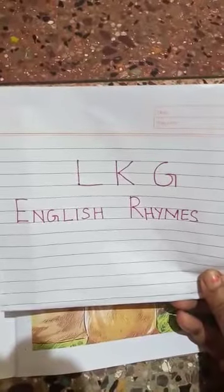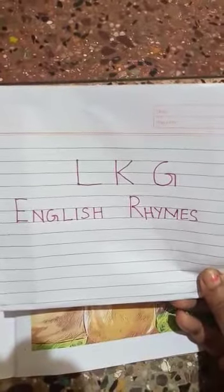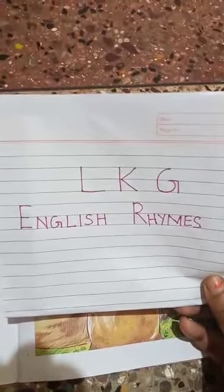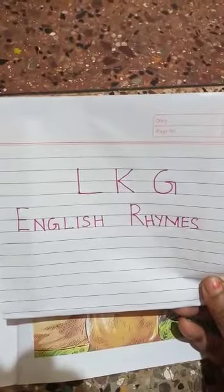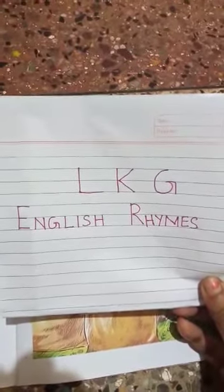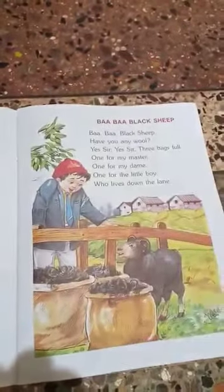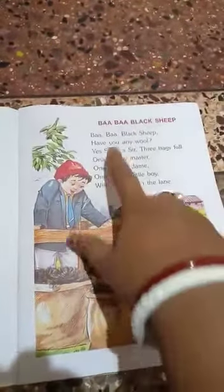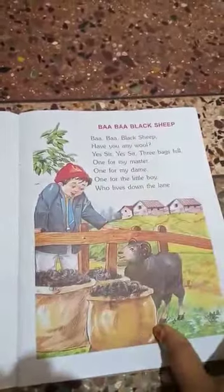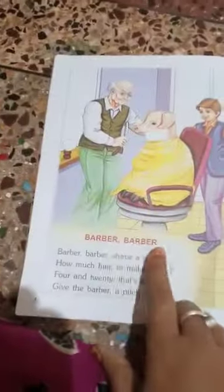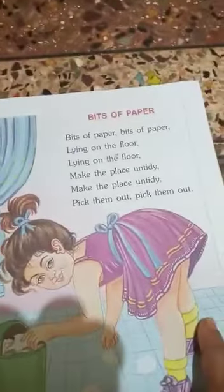Good morning children. Hope you all are fine. Today we will read English rhymes. In the previous video we have learnt two rhymes — the first one is Baba Black Sheep and the second one is Barbar Barbar. I hope you all must have learnt both the rhymes. Now today we will start with the third one.